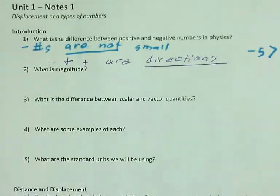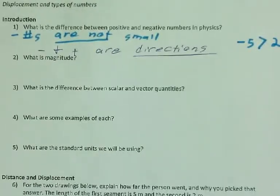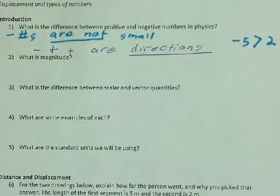So this is something that's going to take getting used to because you've never done this in any other class. Negative is backwards. It's not small. Forwards is positive. Doesn't automatically mean it's large.